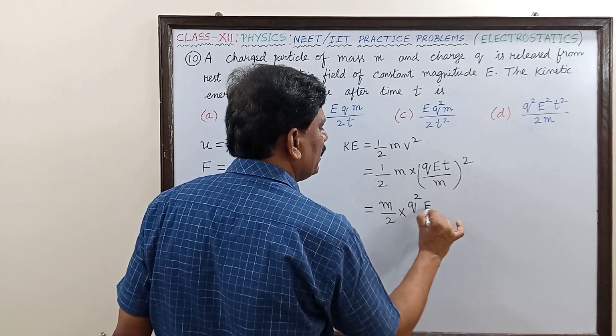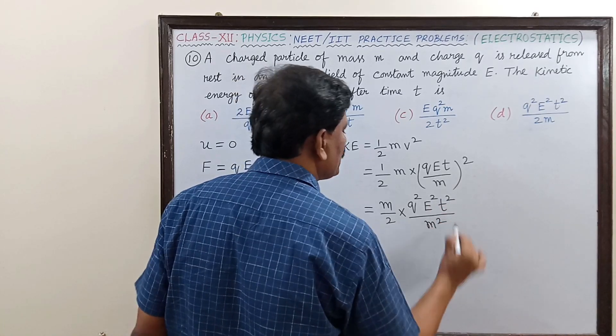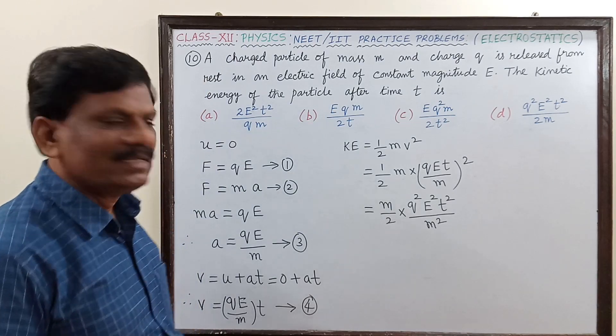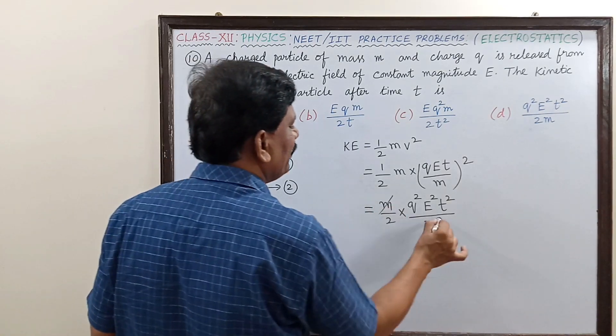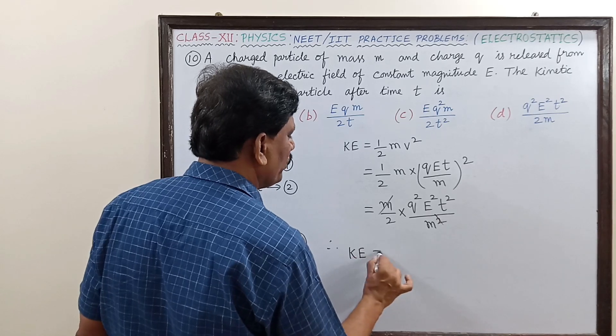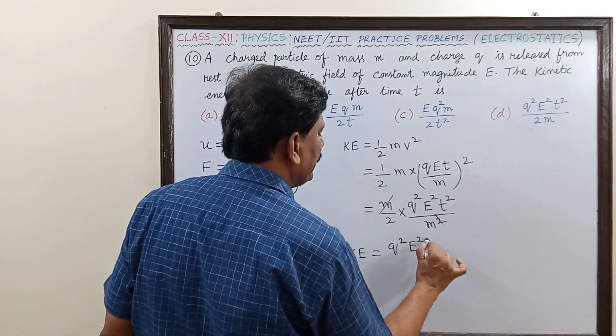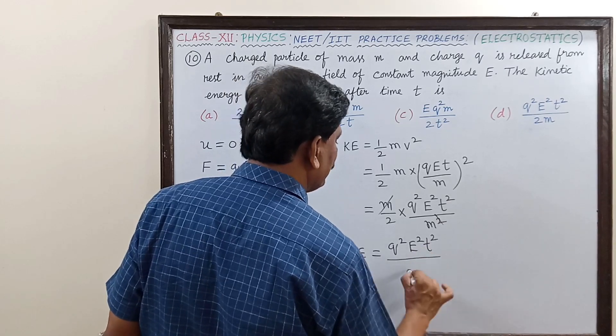Which term is getting cancelled? m is getting cancelled. Therefore, kinetic energy is equal to q squared E squared t squared divided by 2m.